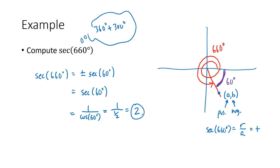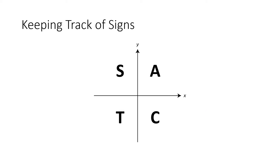So that's how the reference angle method works: figure out where the angle lives, figure out what the reference angle is, use our knowledge of trig functions of acute angles, and also our knowledge of which values x and y are positive and negative in the four quadrants.